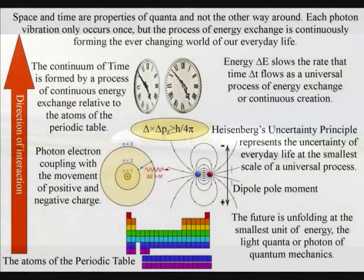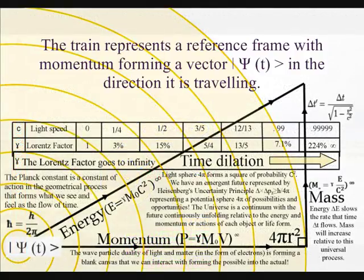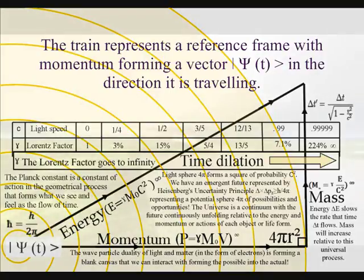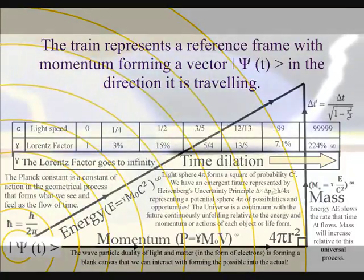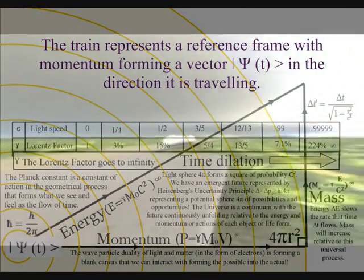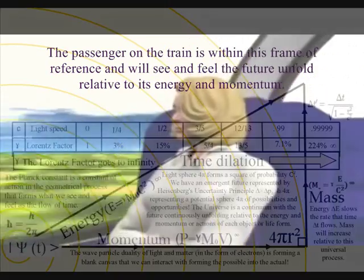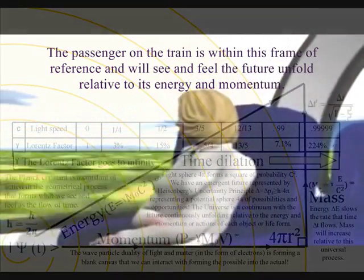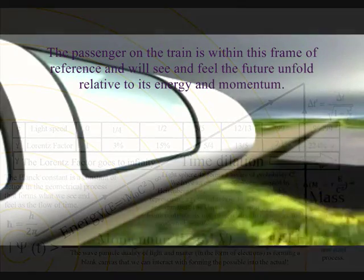The reason why it is energy and momentum, is because momentum is frame-dependent, meaning it is always within a reference frame. In this example, the train represents a reference frame, with momentum, forming a vector in the direction it is travelling. The passenger on the train is within this frame of reference, and will see and feel the future unfold, relative to its energy and momentum.